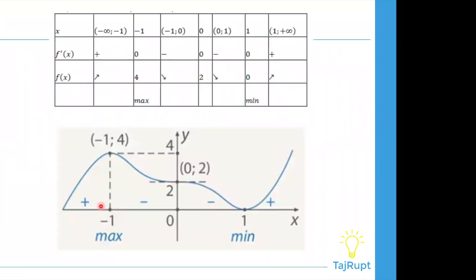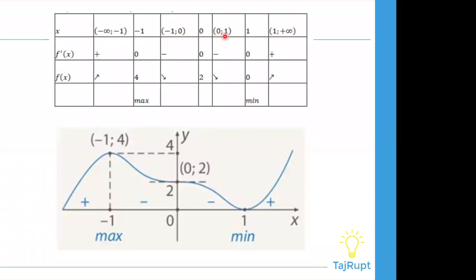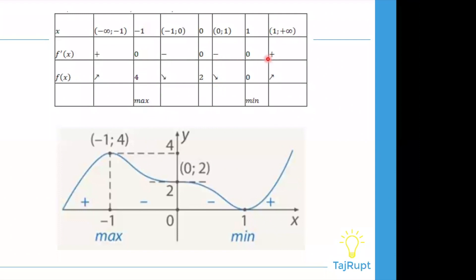Мы видим все данные, которые мы получили в прошлом слайде, вставим в таблицу. И в итоге у нас получится: там, где знак плюс — промежутки возрастания — это от минуса бесконечности до минус единицы и от единицы до плюса бесконечности. И убывает там, где от минус единицы до нуля и от нуля до единицы — это промежутки убывания. Также мы имеем критические точки: минус 1 и 4. Если знак постоянства меняется от плюса к минусу — это критическая точка максимума, а если от минуса к плюсу — это точка минимума.